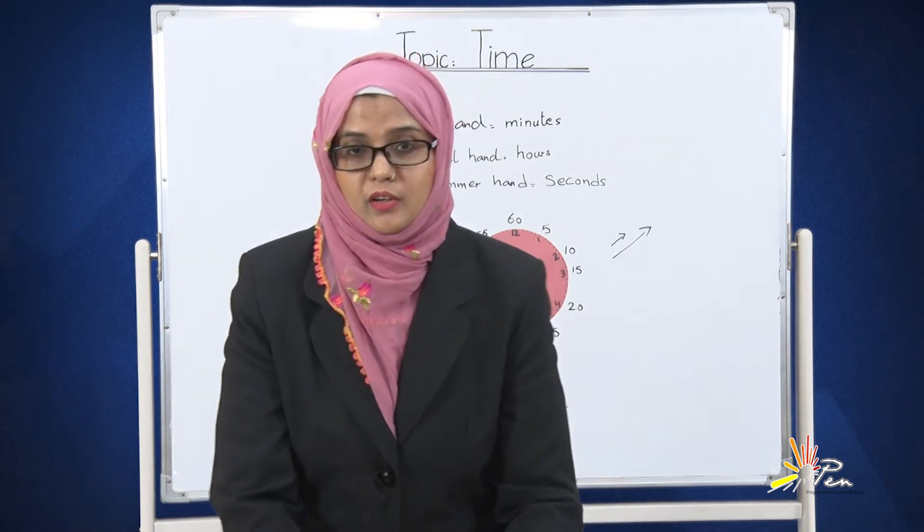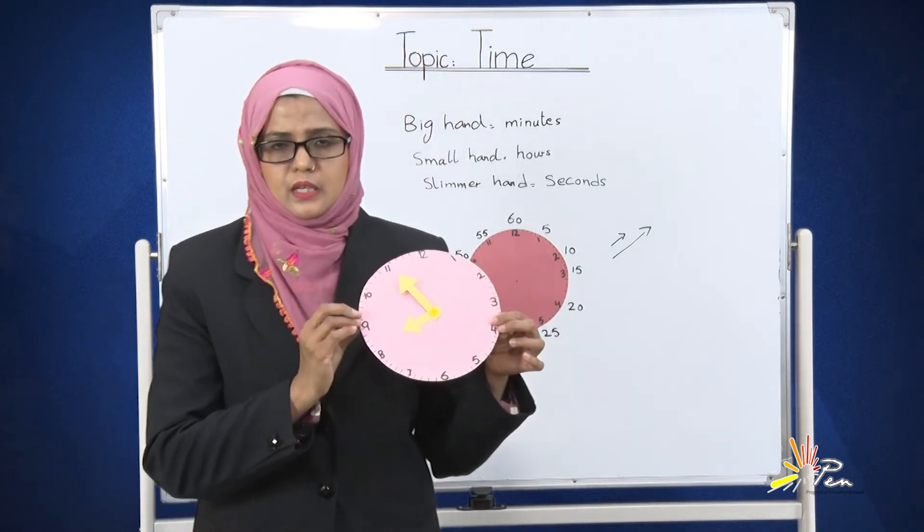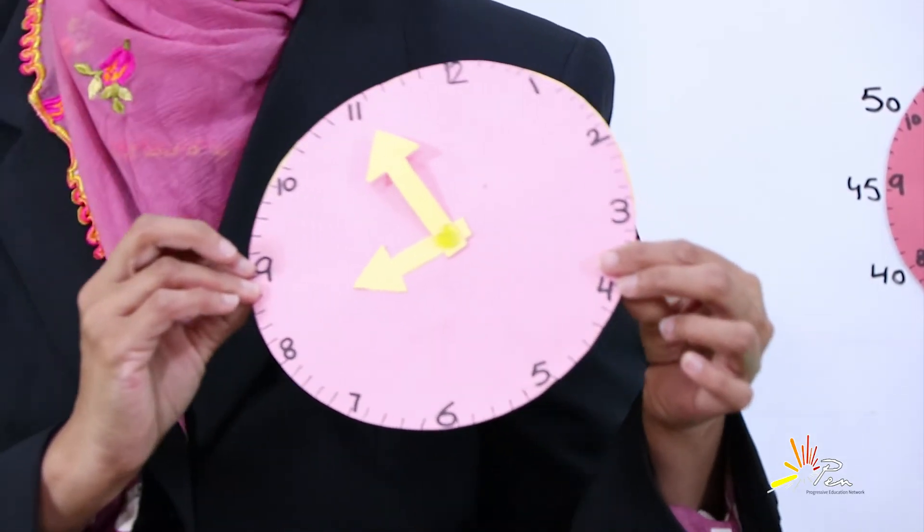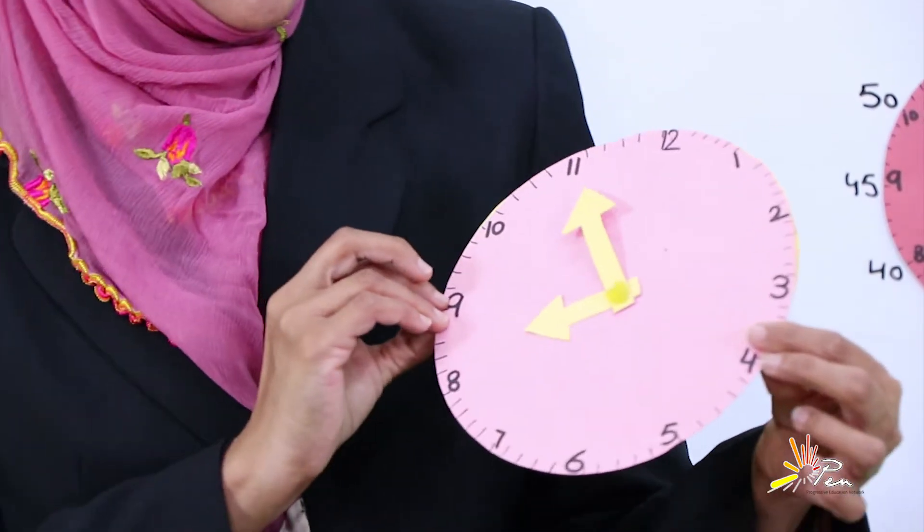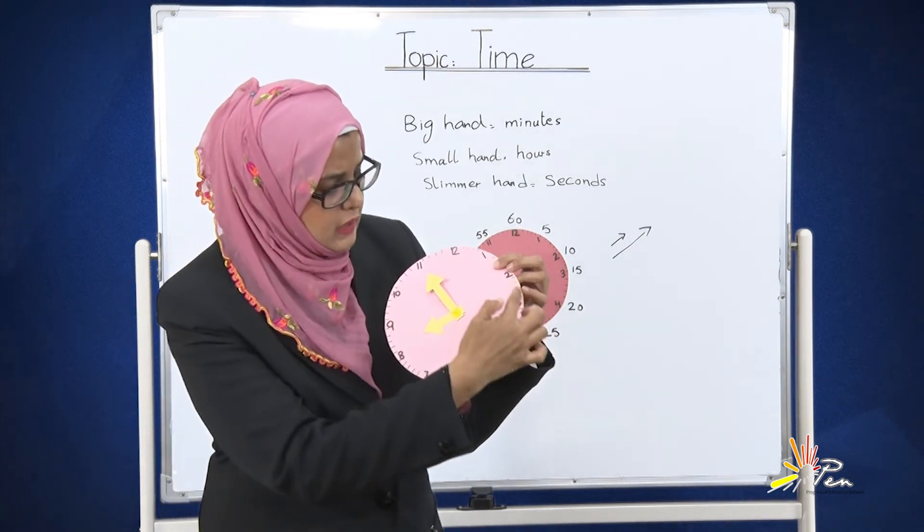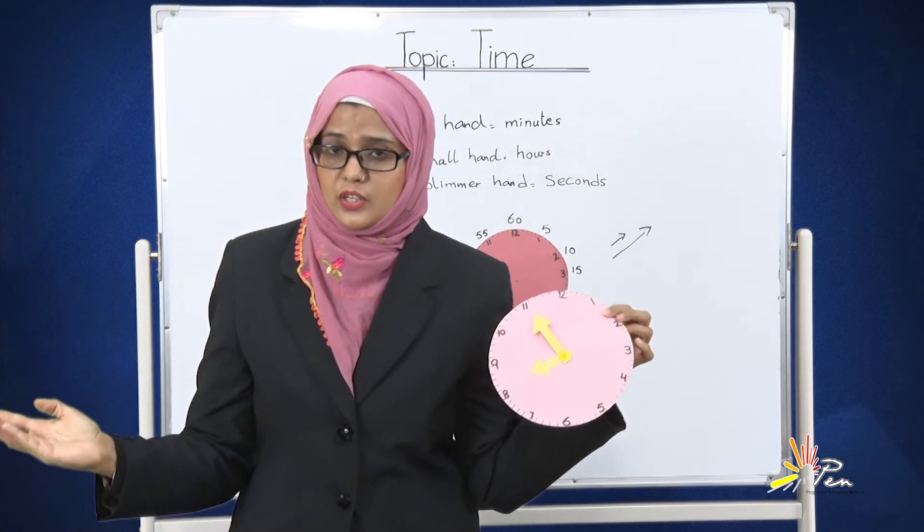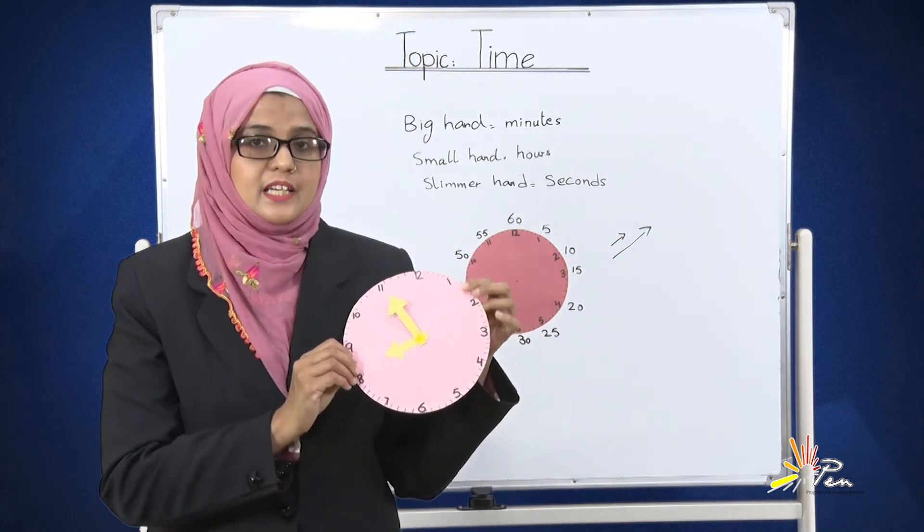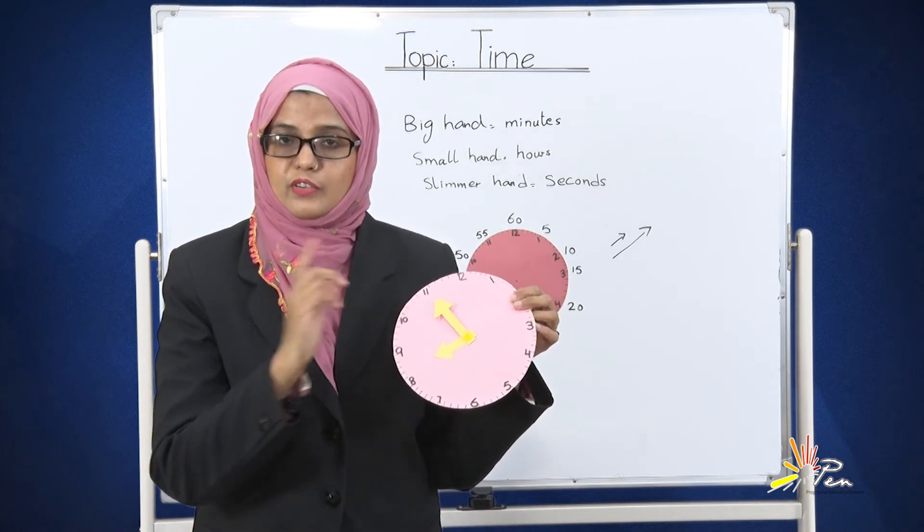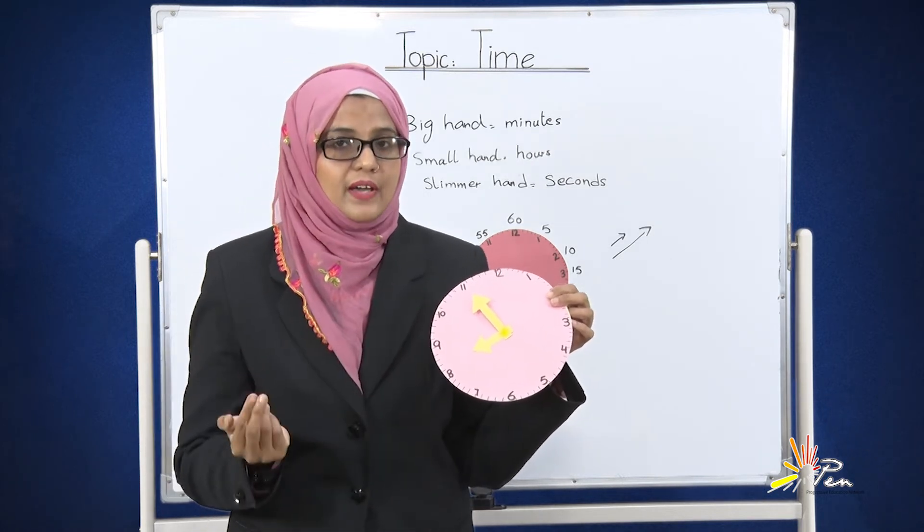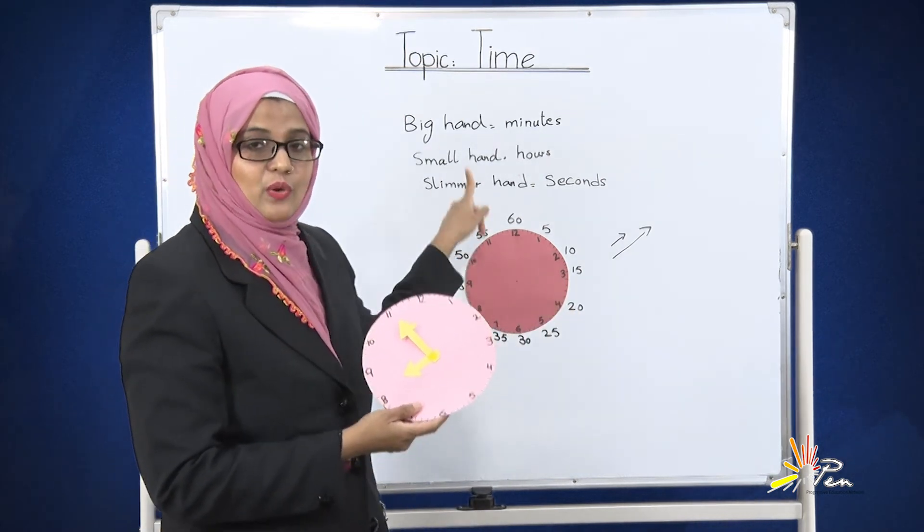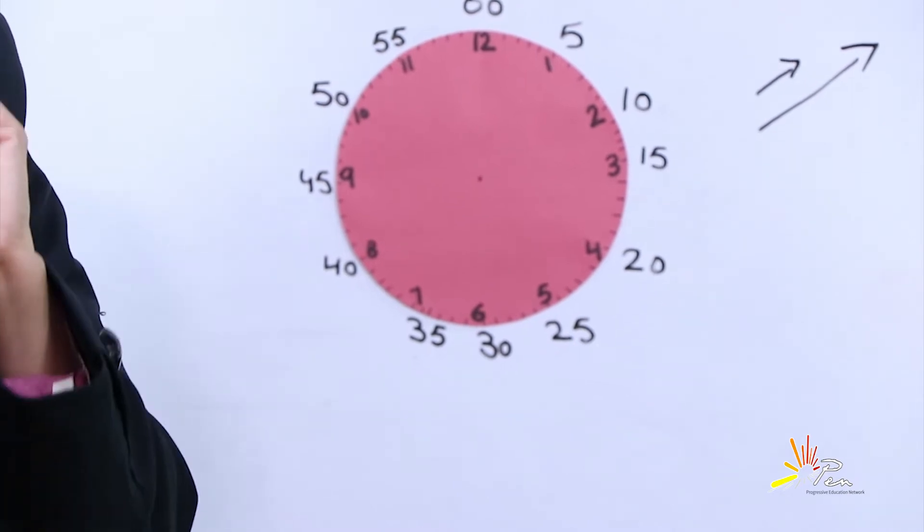Okay students, I have another clock for you in my hand. Just observe this clock and tell me where is the bigger hand. Yes, the bigger hand is on the number 11. If you want to count these small lines, it will take a lot of time. So the easy way is to multiply the number 11 with 5. We have here 55 minutes.